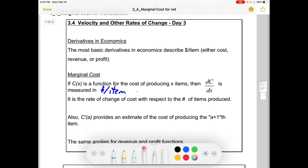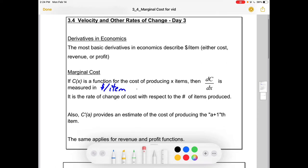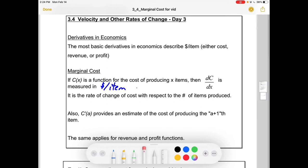The most basic derivatives in economics describe dollars per item - cost per item, revenue per item, or profit per item. And we might be interested in how those things are changing with the number of items produced. Sometimes there's an economy of scale. The more that you produce, the cheaper the cost per item. But then sometimes there are variable costs that come into it, maybe overtime work costs or having to get extra access to a warehouse.